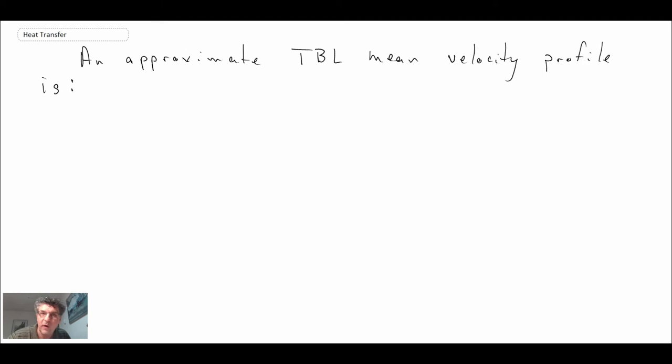But we run into what is called the closure problem with turbulence. And it has to do with terms that arise in the Navier Stokes equations that we are not able to solve for the velocity profile when we have turbulence. And so this is an approximation that is sometimes used.